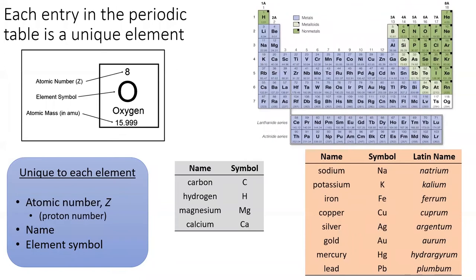Each entry in the periodic table corresponds to a unique element and contains at least three pieces of information: the element's symbol, the element's atomic number, and the element's atomic mass.